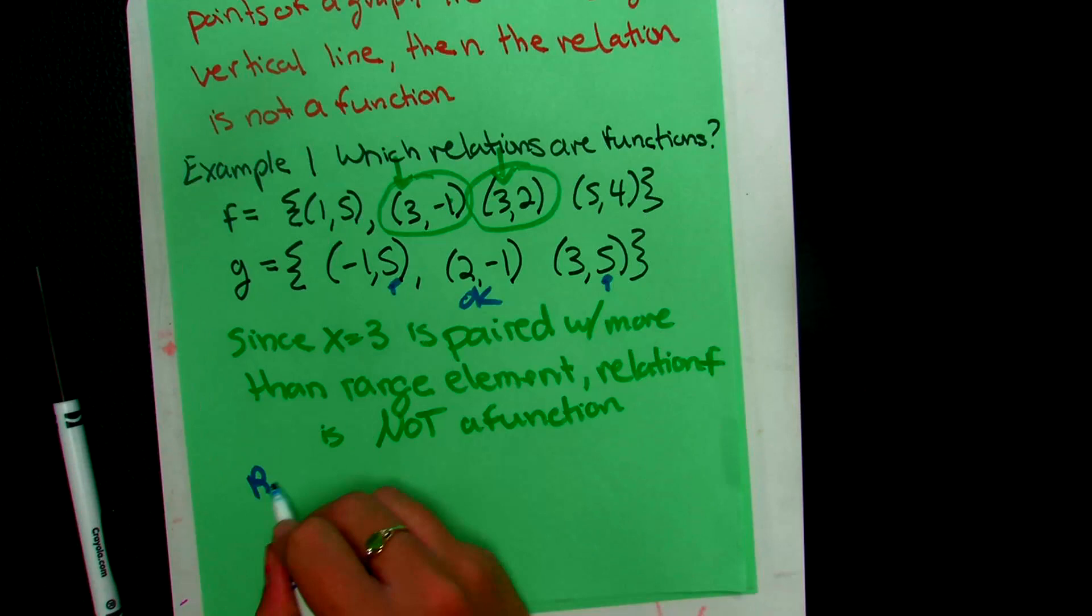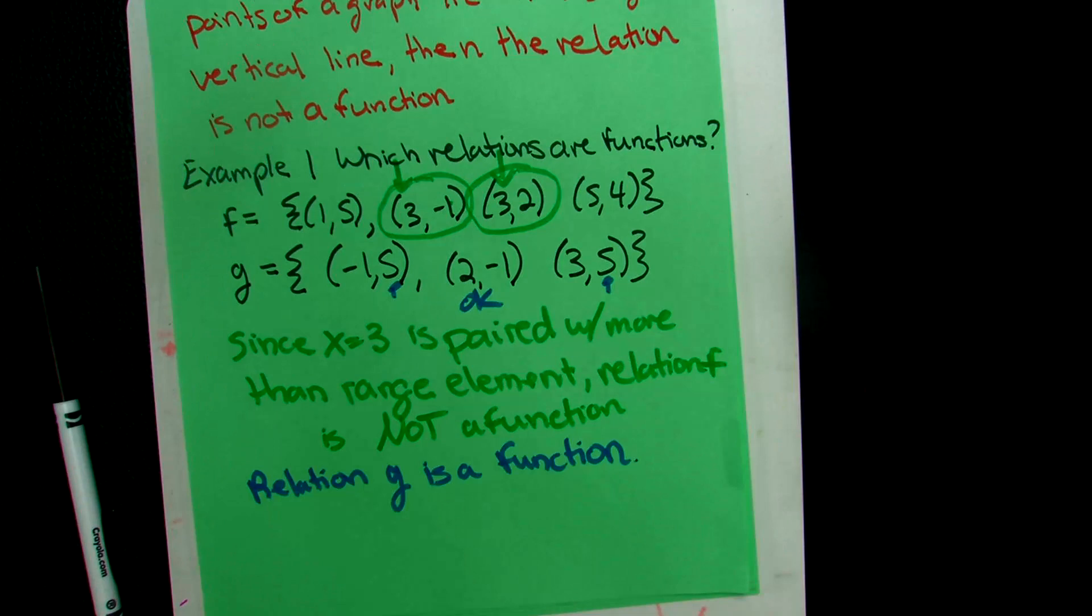Sometimes functions are described by function rules. So in that case, range elements just depend on the domain. And therefore, a variable that represents the domain element is an independent variable. And the variable that represents the range is dependent. So the range depends on the domain. So the domain is independent where the range is dependent.